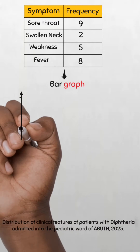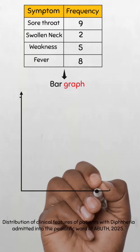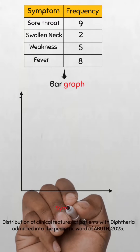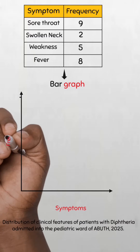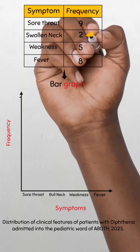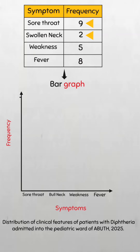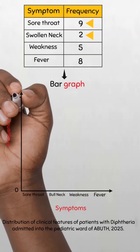Next is to draw and label the axes. The symptoms will be represented on the x-axis and the frequency on the y-axis. The next step is to determine the range and the scale. We know that the data ranges from 2 to 9, so a scale of 0 to 10 will do.